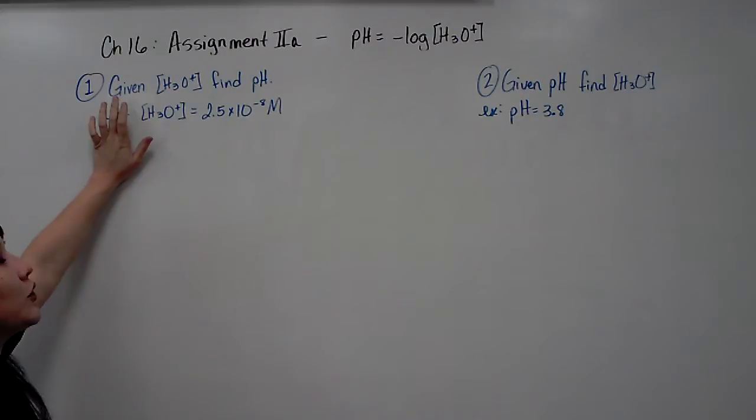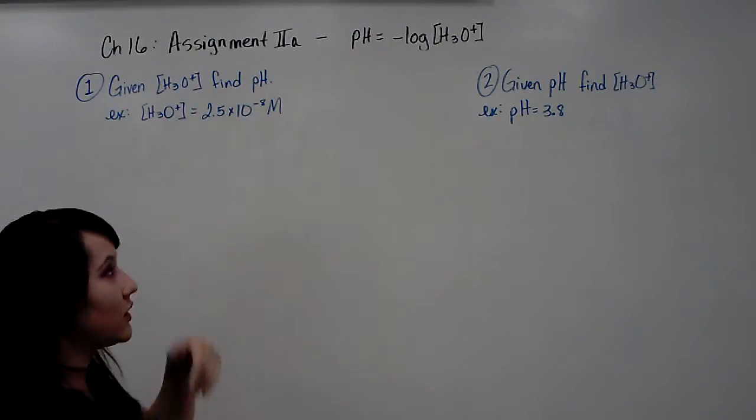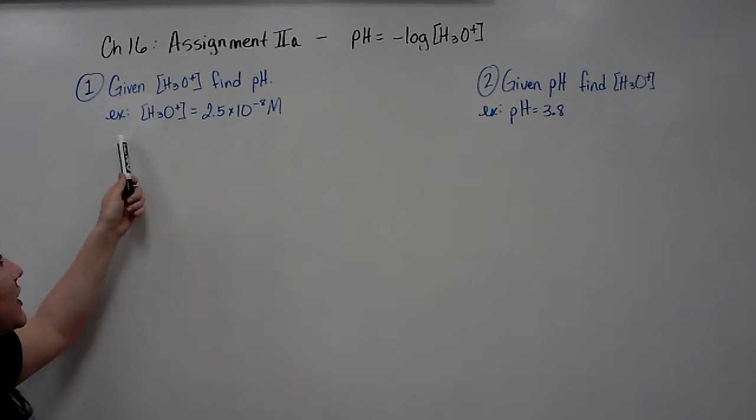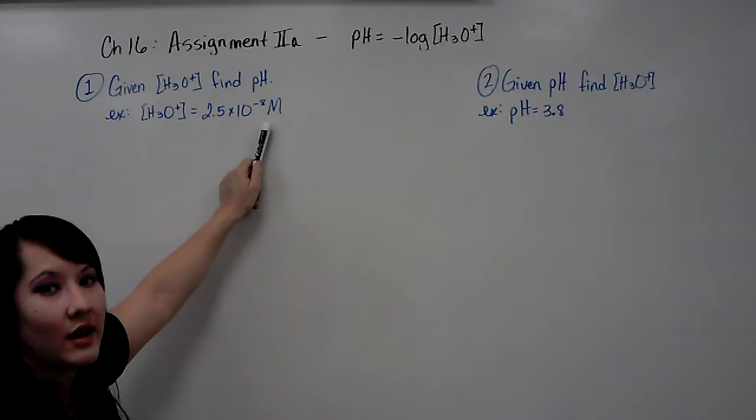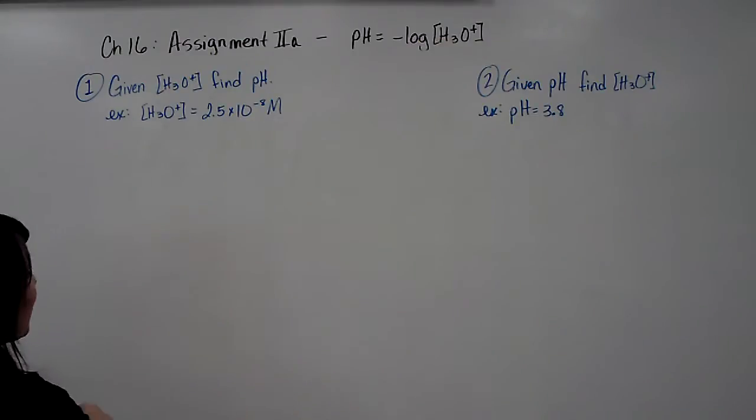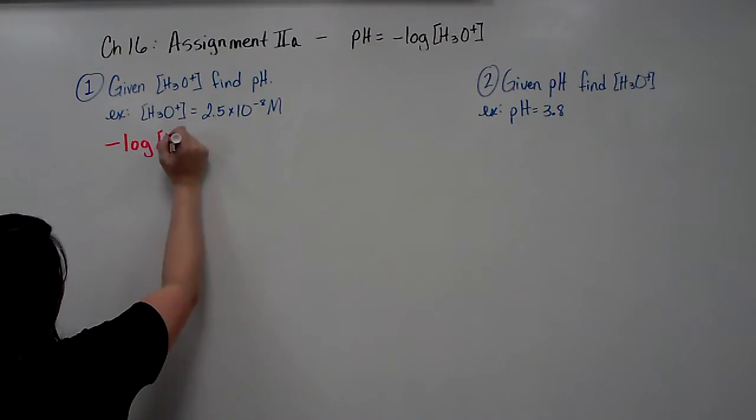For starters, Example 1: if you're given the hydronium concentration, you can find the pH using the equation. So I'm giving you an example. Hydronium equals 2.5 times 10 to the negative 8 molar. Of course, the equation is negative log of hydronium.